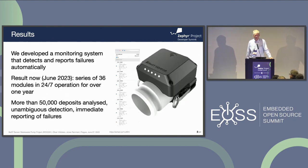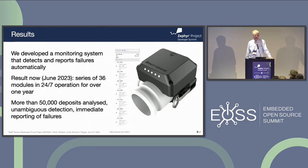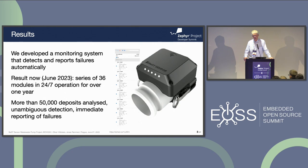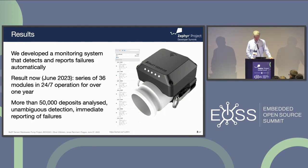After about three years, we developed a monitoring system that detects and reports failures automatically, and it really works the way it should. The result now is a series of 36 modules in 24/7 operation, working night and day continuously for over one year. There are no serviceable parts from the outside, no buttons, nobody has to switch them on because everything is automatic. Over time we have more than 50,000 wastewater deposits which are analyzed and a protocol sent wirelessly with unambiguous detection of any issues. We send a protocol when everything is fine but also give an alert when there is a failure. This is an MQTT report in JSON format — a very short telegram which reports every wastewater service.